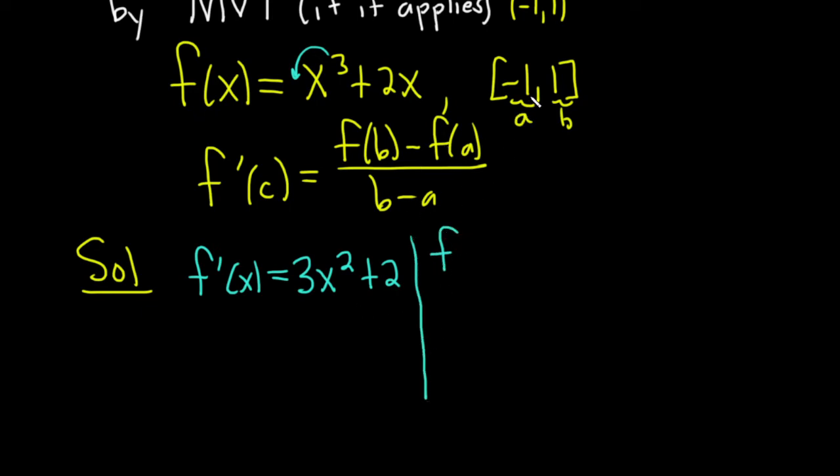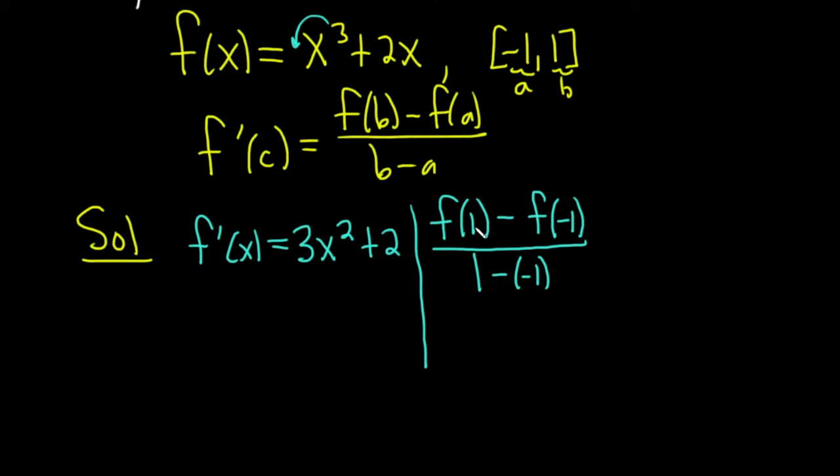All right and now for the other part. f of b, so that's b is one. So it's f of one minus f of negative one, and that's being divided by one minus negative one, so b minus a. Okay, f of one - we're just basically going to plug in one for this. So it'll be one plus two, so three.